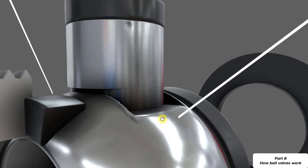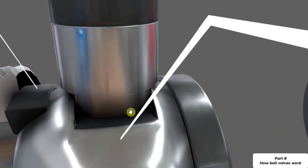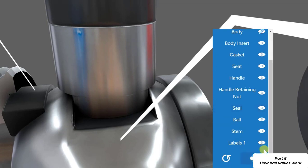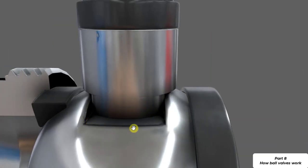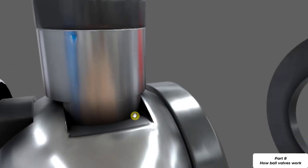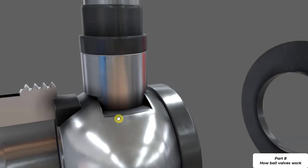Okay so now we can see that the stem connects. Get rid of the labels as well. The stem connects into the top or in this groove on top of the ball and that's what allows us to rotate the ball and open and close the valve.